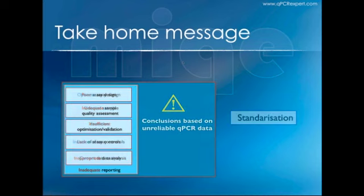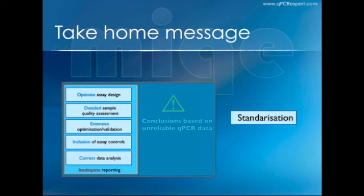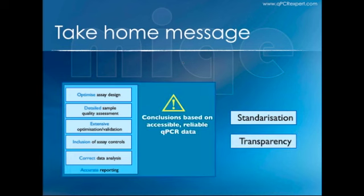One way of addressing this is through standardization, which aims to optimize assay design and through extensive optimization, validation, and inclusion of controls, get people to conduct experiments in a way that allows others to judge that things have been done the right way. Once you've standardized, you should be able to have more transparency as well, and together this will allow us to reach conclusions based on accessible, reliable qPCR data and accurate reporting.